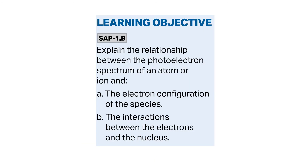The learning objective was to explain the relationship between the photoelectron spectrum and the electron configuration of the species, which we covered through multiple examples. The second part — interactions between electrons and the nucleus — was addressed in the last question, showing how proton count affects the position of signals in the spectrum.